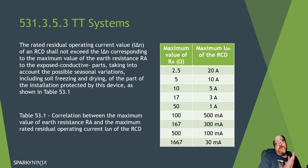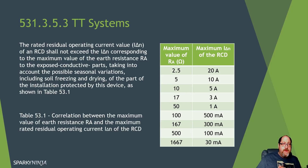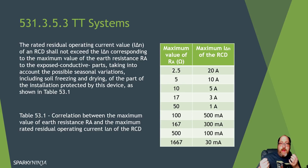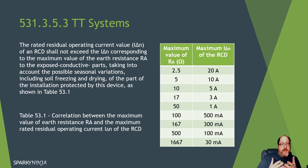Regulation 531.3.5.3 for TT systems: they've redrafted the table that gives the maximum value of earth resistance for exposed conductive parts when selecting an RCD to protect a TT system. It takes into account possible seasonal variations for electrodes and reflects the maximum ideal operating current of the RCD. This is essentially Ohm's Law using a safe touch voltage of 50V — they've just expanded it into a bigger table for convenience.